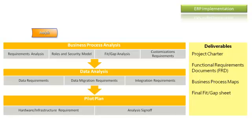Finally, the analysis sign-off is obtained. The deliverables of the Analysis phase include the final project charter, a Functional Requirements Document, a business process map drawing all business processes in a flowchart from high level down to a very low level of detail, and the final fit-gap analysis sheet identifying which requirements fit application functionality, what the gaps are, and how those gaps will be handled as solutions.